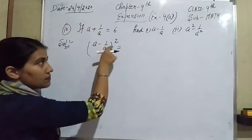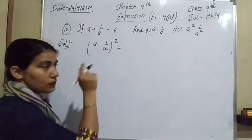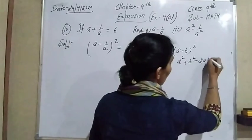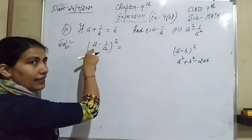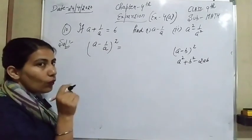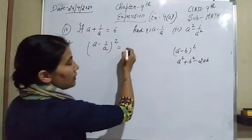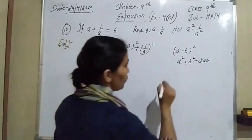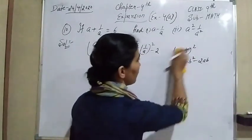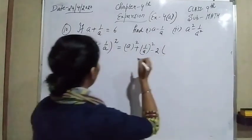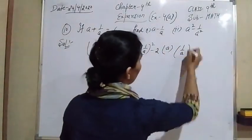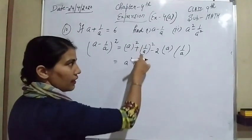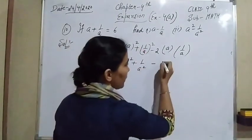If we square A minus 1 over A, here the identity A minus B whole square is being used. A minus B whole square equals A square plus B square minus 2AB. Now using this identity, the value of A is A and the value of B is 1 over A. Putting all values in: A square plus 1 over A square minus 2, because A and A both are cancelled — only 2 remains.